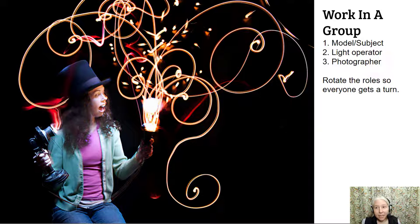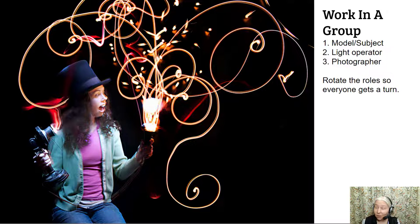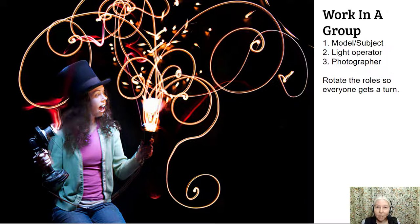It looks like the person is kind of blowing flecks of light from her hand. This project is easiest if you work in a group. One person can be the model or the subject, although you don't necessarily have to use a person as your subject. Another person can be the light operator, and a third person can be the photographer. I would like for you to rotate the roles so that everyone gets a turn doing all of the different jobs.